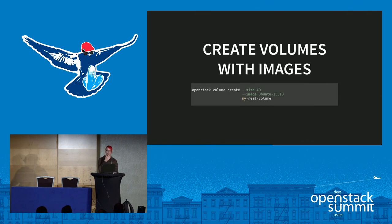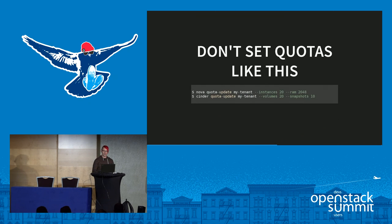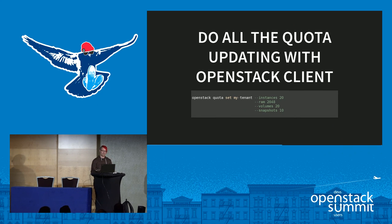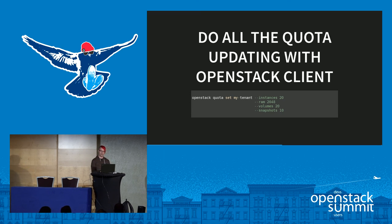If you want to create a volume off of an image, you say 'OpenStack volume create' and specify the size as well as the image. Instead of setting quotas by having to set Nova quota or Cinder quota as separate requests with different options, you can put that all together and say 'OpenStack quota set,' then specify the tenant and the options you want — instances, RAM, volume, and snapshots all in one command.